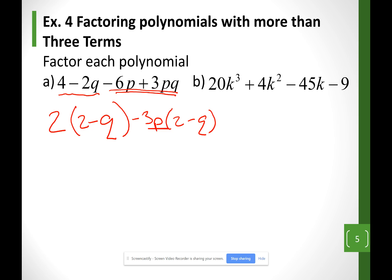I'm going to have 2 minus Q. My factors inside the parentheses do match. So my factors at the end, my two factors will be 2 minus Q and 2 minus 3P.